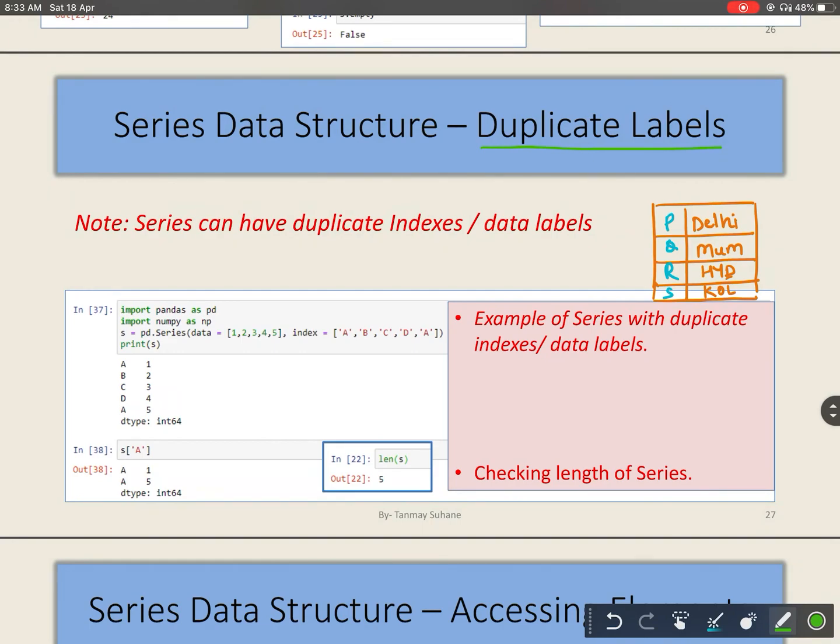Series is a one-dimensional data structure with data and a label to it. This is called indexes or data labels. In this video we will see these data labels can be duplicate. If it is P, I can make another data with the same data label as P.